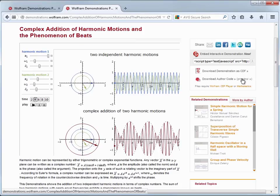or I can download the author code, which means I'll get a notebook with the necessary Wolfram language code to generate the model, which is useful in case I want to see how it was built or in case I want to make some changes or tweaks to it to customize the model to my particular needs.